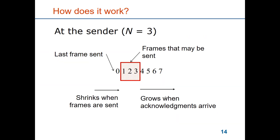Here is an illustration for a sending window of size 3. The last frame that has been sent is 0 and it has been acknowledged, so now the sender has the right to send 3 frames: 1, 2, and 3. As it sends them, the window will shrink from the left. Once the sender receives an acknowledgement, the window will expand to the right, but never being bigger than 3 frames because that is the maximum limit for the sender.